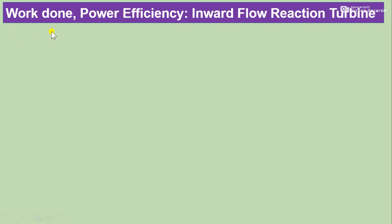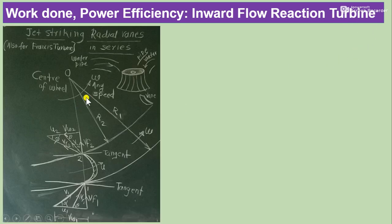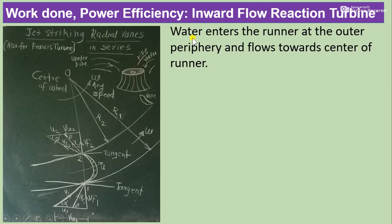Now we will see work done, power, and efficiency of inward flow reaction turbine. The diagram used here is the same as for the radial curved vane, because the concept of radial curved vane is applied to the Francis turbine. Water enters the runner at the outer periphery at point 1 and flows towards the center of the runner at point 2.